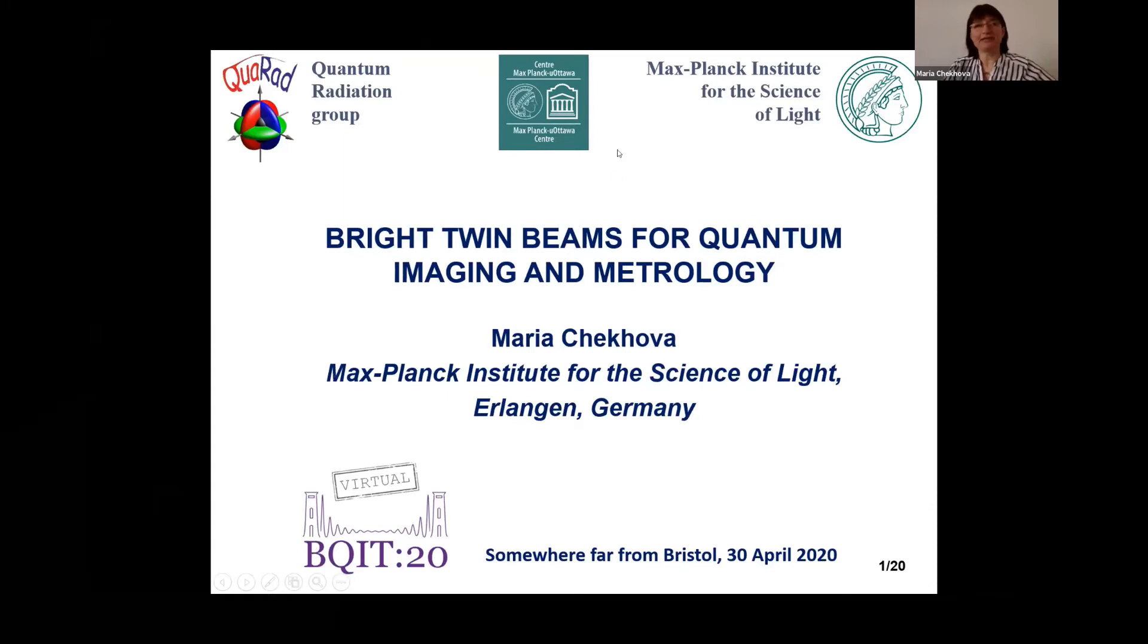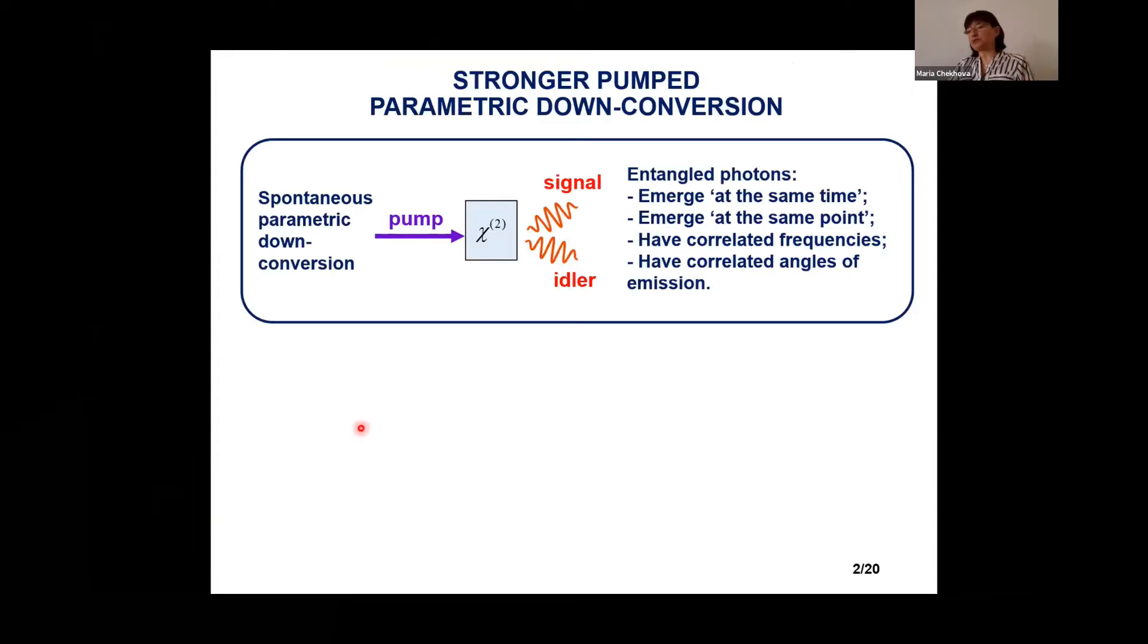I am from Max Planck Institute for the Science of Light in Erlangen, but this work has been done mostly in collaboration with the Ottawa people. Most of you know what is parametric down conversion, but most of you know parametric down conversion as a source of entangled photons. And this is really what happens when we pump a second order nonlinear crystal and we generate signal and idler photons. These photons appear at the same time and at the same point, not exactly at the same point at the same time, but roughly. And therefore they have entanglement in time, in space, and also in frequency because their frequencies are correlated and the angles of emission are correlated.